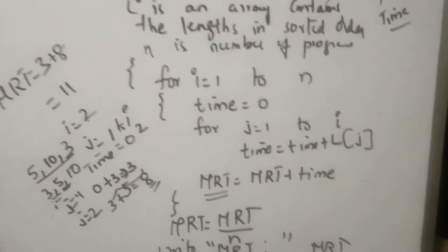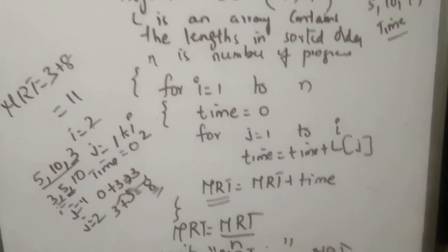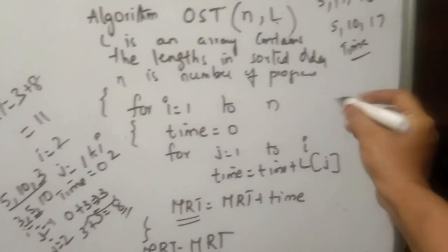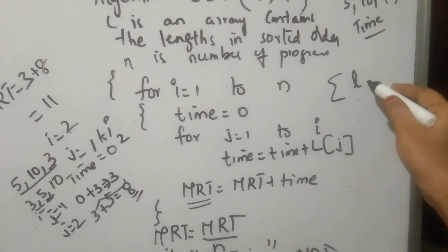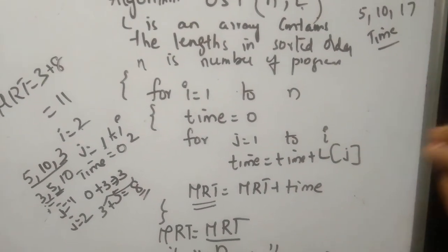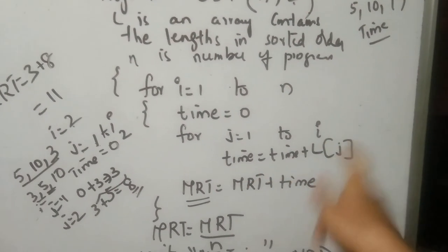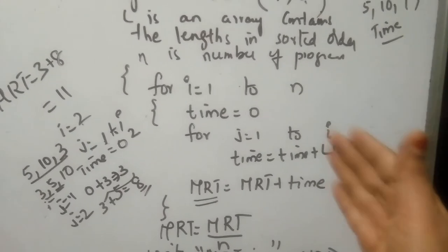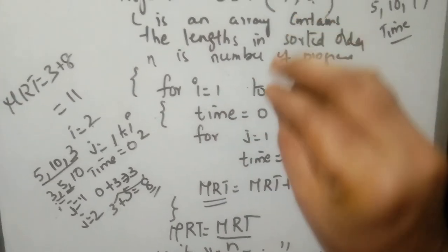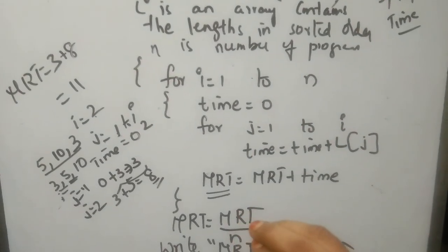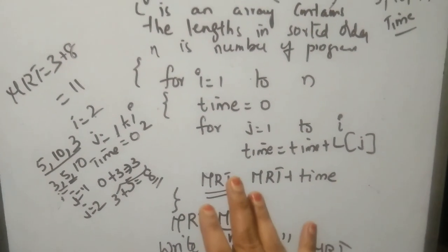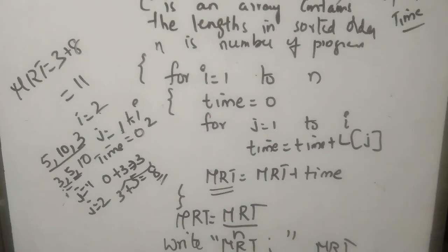That's it — it's simple. We have n programs. For each program we calculate the cumulative length from L1 through Li. We keep adding all those retrieval times. Finally, compute mean retrieval time by dividing total time by number of programs. Thank you for watching my channel.